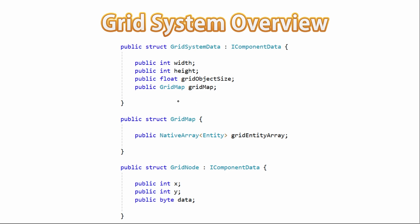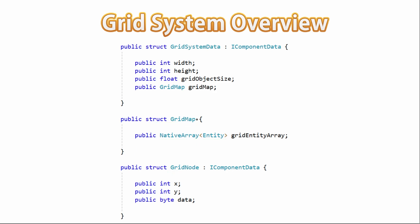Then inside the GridSystemData, we're going to store a GridMap. This one is just a normal struct — it is not a component. And inside the GridMap, we're going to store a native array of all the entities. These are going to be all the entities that make up our grid. So on each grid position, on each grid node, we're going to create a brand new entity, and on each of those we're going to attach this GridNodeComponent. This component is basically what stores what data we have on each grid position. For the basics, we're going to store the x and y position, and then some kind of data. Later on, we're going to expand upon this to add data related to the pathfinding algorithm. So this is the main structure of our grid system: the GridSystemData, then inside it a GridMap, inside that an array of all the entities, and all those entities have the GridNodeComponent — together we have all the data for our entire grid.